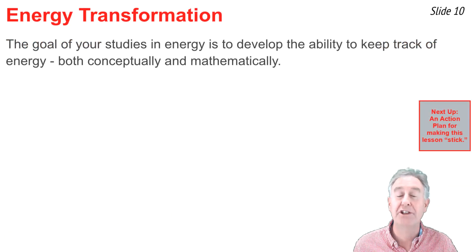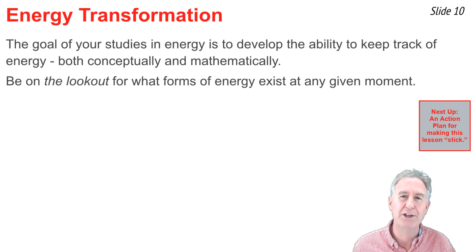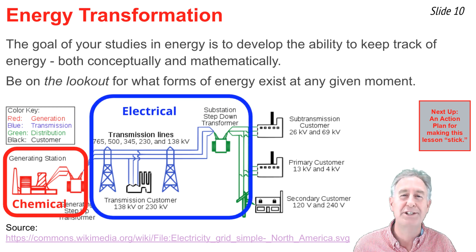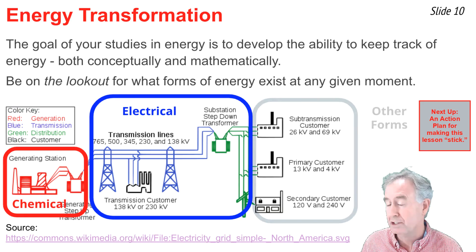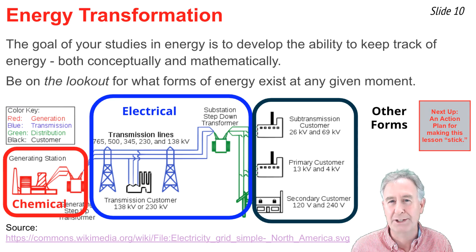The goal of your studies in energy is to develop the ability to keep track of energy, both conceptually and mathematically. Always be on the lookout for what forms of energy exist at a given location and moment in time. Consider this diagram of an electric power grid: at the generating station, chemical energy is used to produce electrical energy, which is distributed across power lines to homes and businesses. Once it arrives, electrical energy is converted to useful forms including light energy, sound energy, and thermal energy.